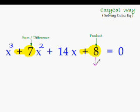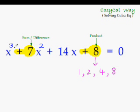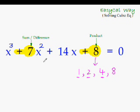The factors of 8 are 1, 2, 4, and 8. Since this cubic equation has all plus signs, we can concentrate on just the sum. Obviously, the sum of 1, 2, and 4 is 7, so these three are the factors. To find the solution of this cubic equation, you just have to change the signs of the factors. That's it — question solved. The three solutions are x equal to minus 1, x equal to minus 2, and x equal to minus 4.